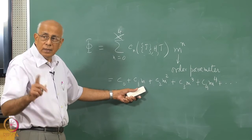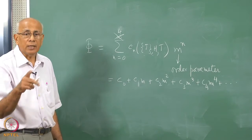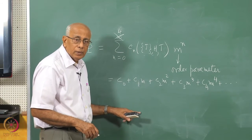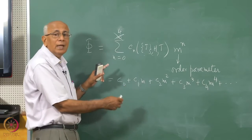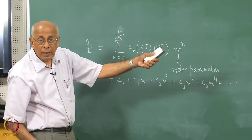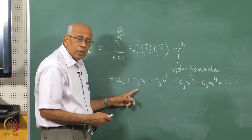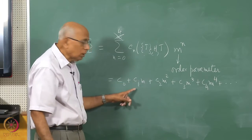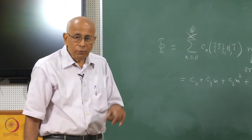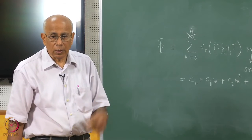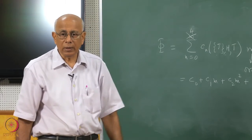The term C₁M cannot exist for H = 0 because if it did, differentiating φ would give a constant C₁ independent of M, which would not vanish above Tc. This would produce a nonzero order parameter above Tc, contradicting our definition that the order parameter is zero above and nonzero below the critical point. So C₁ = 0 at H = 0.